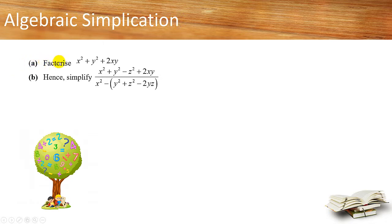For part A, we want to factorize x squared plus y squared plus 2xy. And for part B, we need to hence simplify this whole expression.